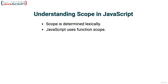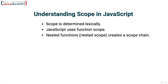JavaScript uses function scope — when a new function is declared, that creates scope. Everything in JavaScript starts in the global scope, but as you begin creating functions, that creates scope as well. Nested functions — declaring a function inside another function — create what we call a scope chain. These are the three concepts important to keep in mind as we go through these examples.